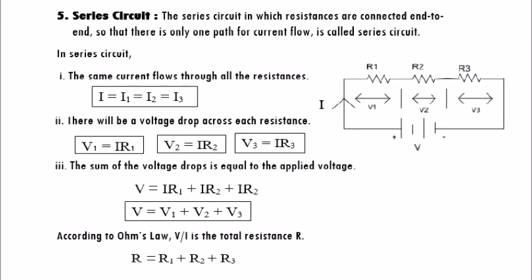Series circuit: a series circuit is one in which resistances are connected end to end so that there is only one path for current flow. In a series circuit: the same current flows through all the resistances; there will be a voltage drop across each resistance; and the sum of the voltage drops is equal to the applied voltage. When a number of resistors are connected in series, the equivalent resistance is given by the arithmetic sum of their individual resistances.